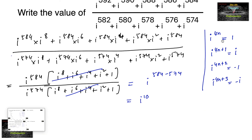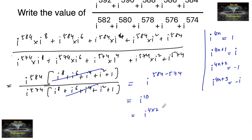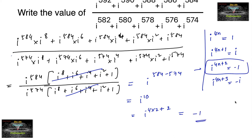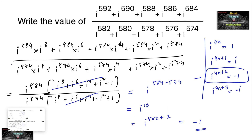Now, what is i to the power of 10? Dividing 10 by 4 gives 4 times 2 plus 2, so the remainder is 2. This is the 4n+2 form, so the answer is i squared which equals minus 1. Therefore, the value of this expression is minus 1.